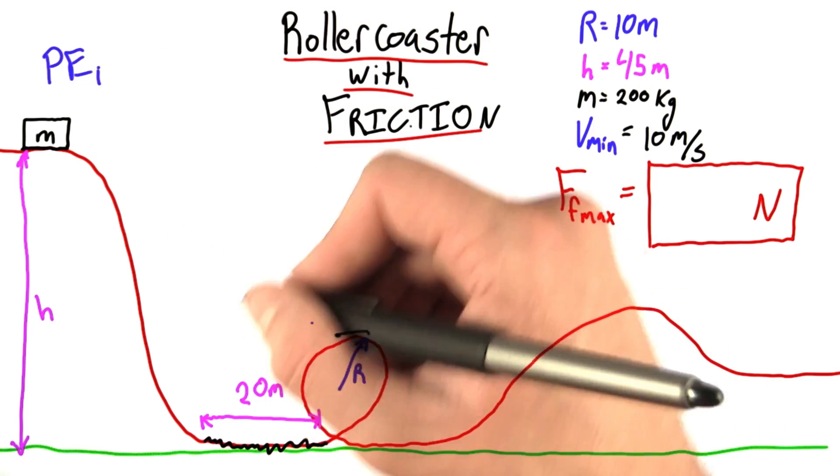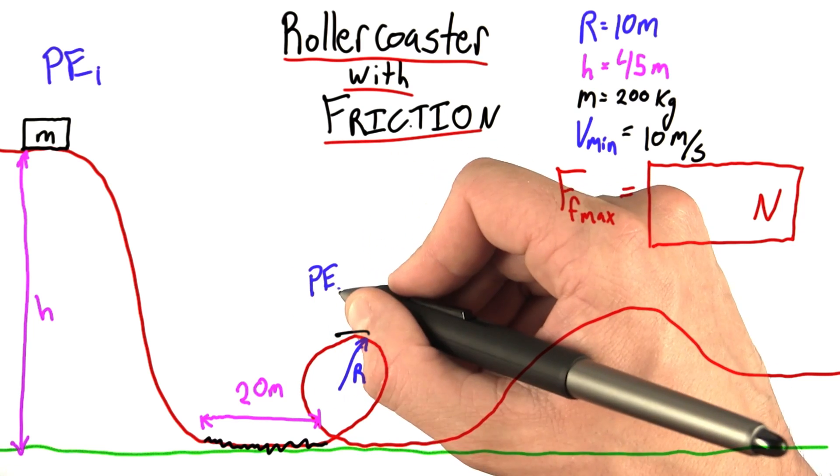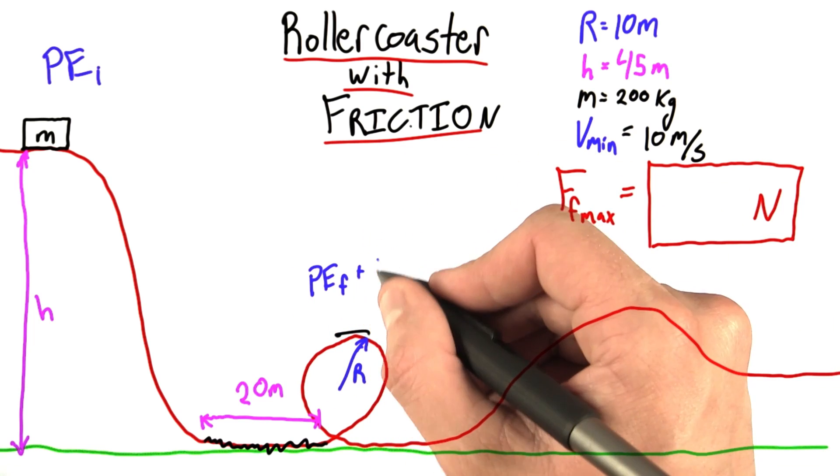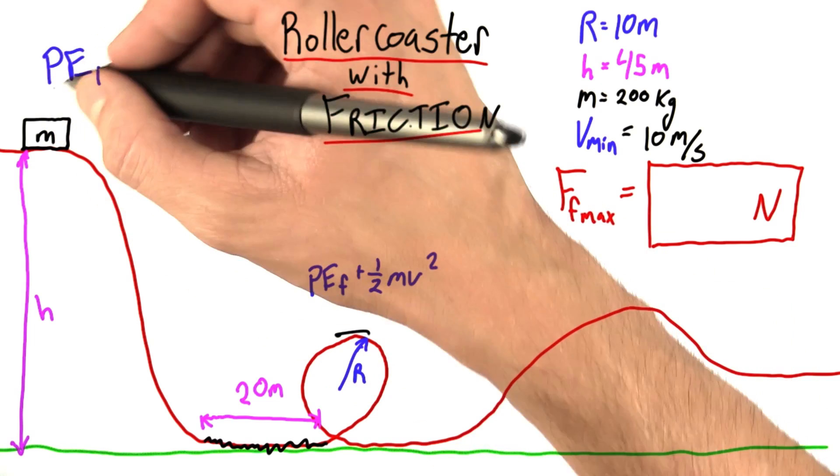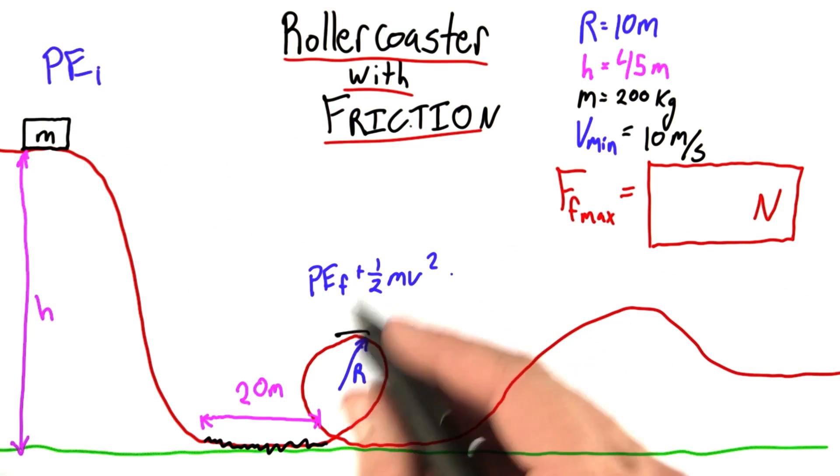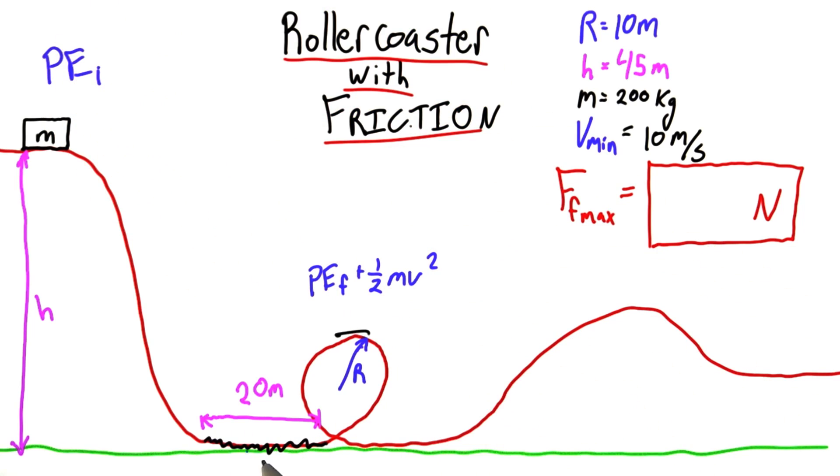Since what we're going to need will require both some potential energy final and some kinetic energy. Now, hopefully what we have is greater than what we need because we're going to lose some energy when we go over this area with friction.